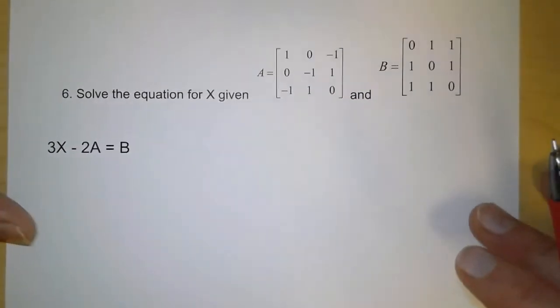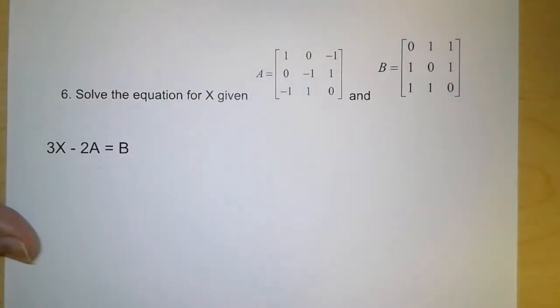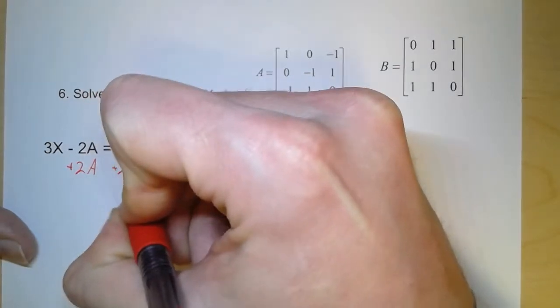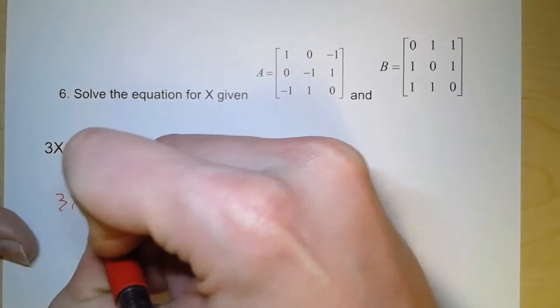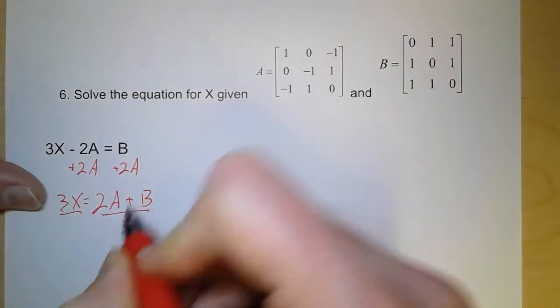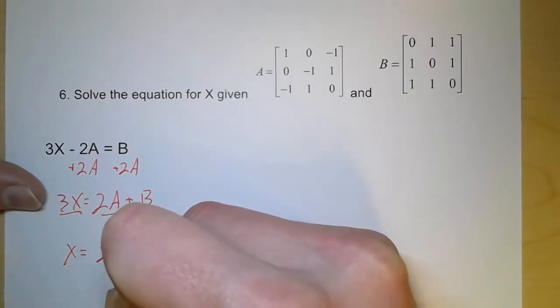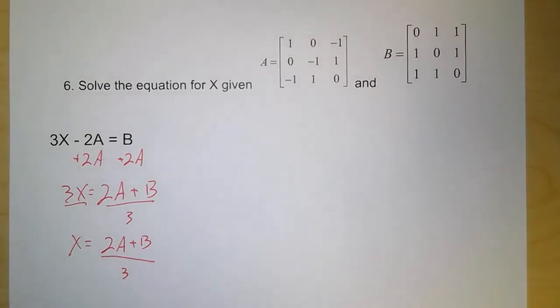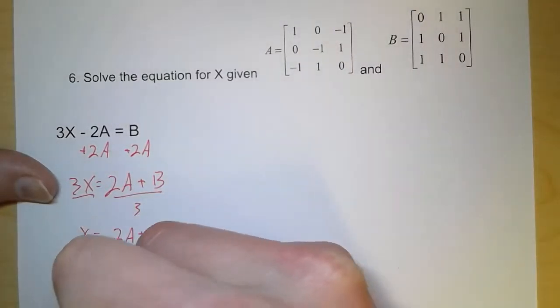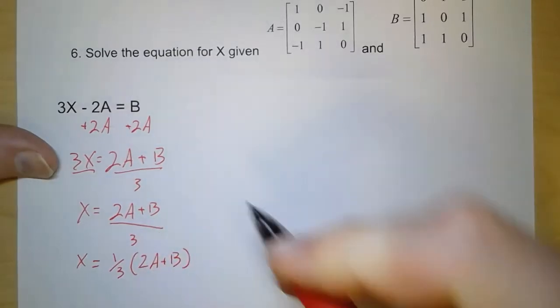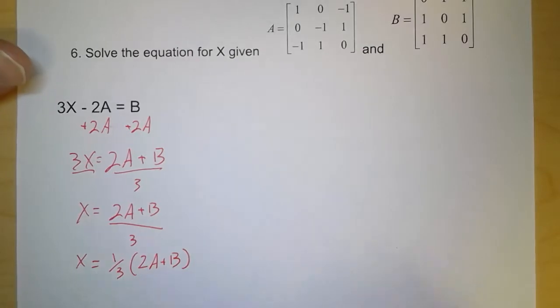For the last problem, similar to the one in the previous video, we have an equation involving matrices. So first, I want to solve for X. So I'm going to add 2A. So 3X equals 2A plus B. And then we have to divide by 3. So X equals 2A plus B divided by 3. Now we've been talking about scalar multiplication. We really haven't been talking about scalar division. And that's because anything that's written as division can be rewritten as multiplication. So I'm going to do that here. I'm going to rewrite this. And instead of dividing by 3, I'm going to multiply this quantity by 1 third. So X equals 1 third of the quantity 2A plus B.